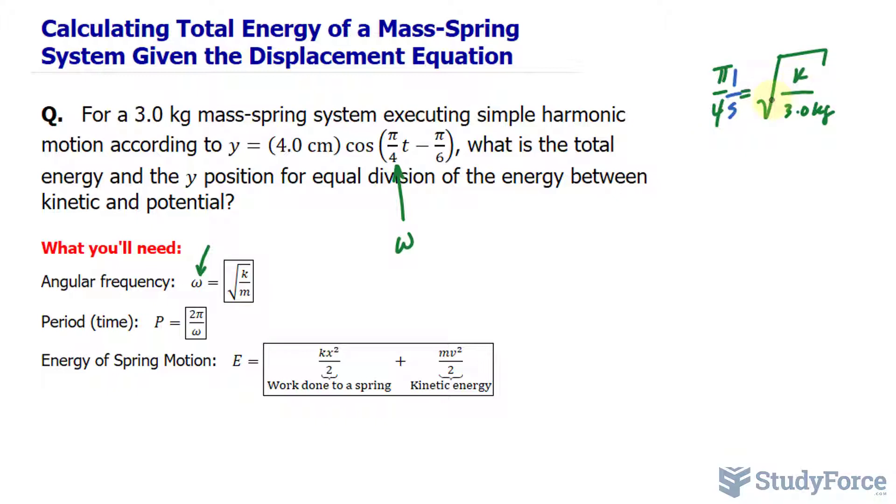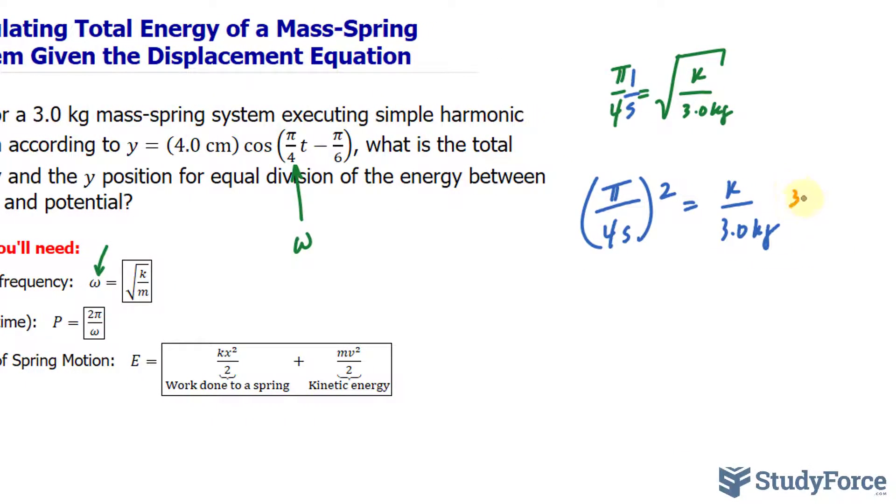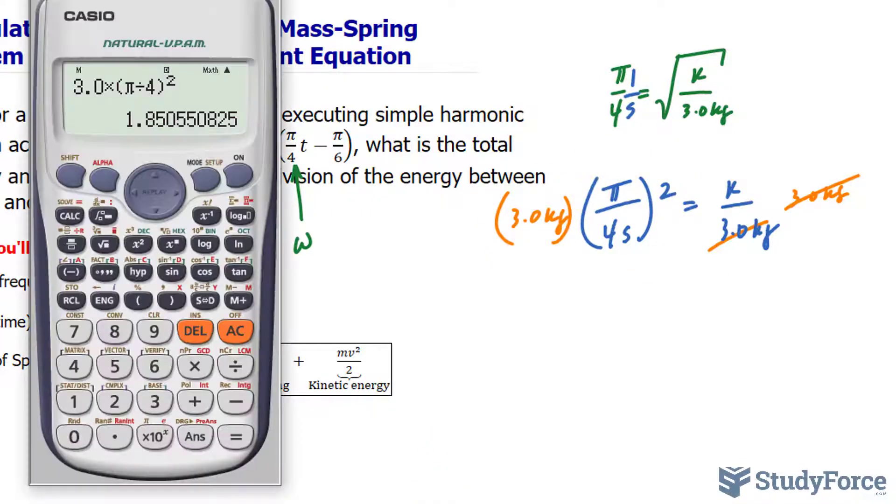Now, to solve for k requires us to square both sides of the equation, where I have π/4 seconds being raised to the power of 2, and on the right side we have k over 3.0 kilograms. Multiplying both sides by 3.0 gets rid of the 3.0 at the bottom. And now, multiplying all of this out should give us the following.